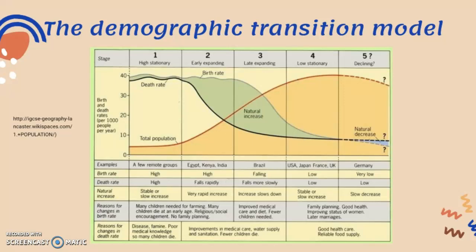In stage three, birth rates also begin to fall because of improved knowledge about health and medical care. Cultural norms change where fewer children are needed, as they are no longer seen as an economic asset as they would be in many developing or less developed countries. The natural increase, as shown by the orange line, becomes less steep.